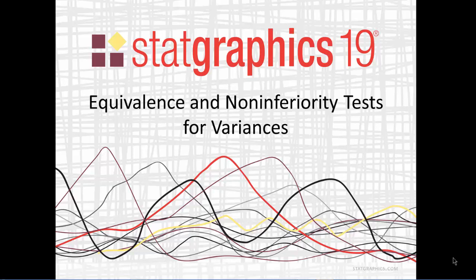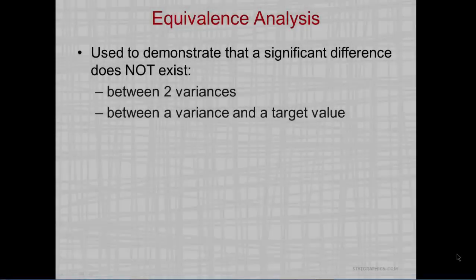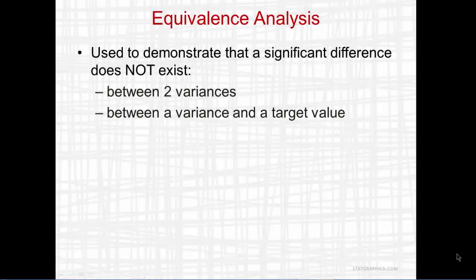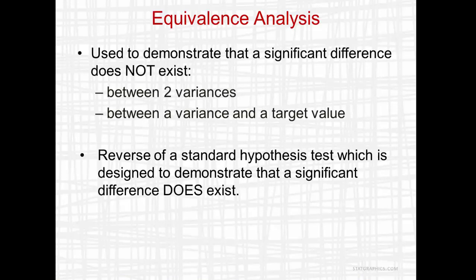This video describes new equivalence and non-inferiority tests for variances that have been added to Statgraphics 19. Equivalence analysis is used to demonstrate that a significant difference does not exist between either two variances or between a variance and a target value. This is the reverse of a standard hypothesis test, which is designed to demonstrate that a significant difference does exist.